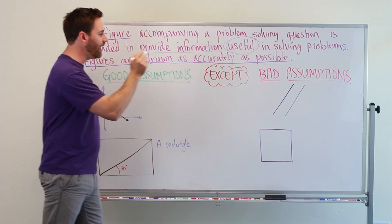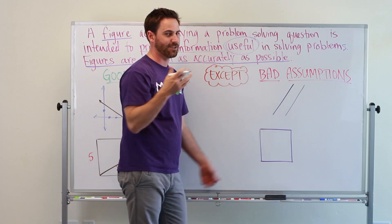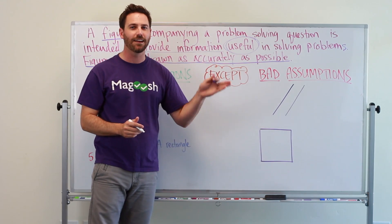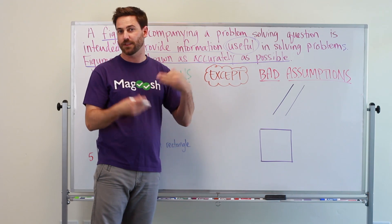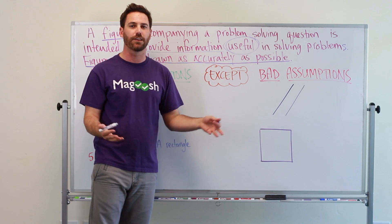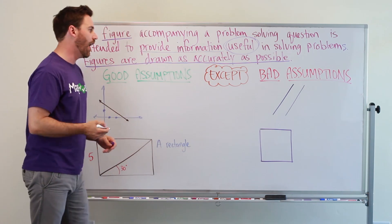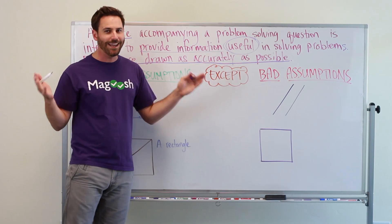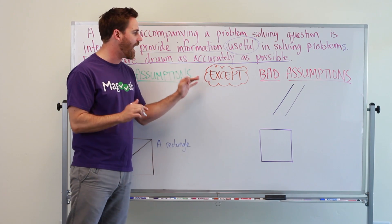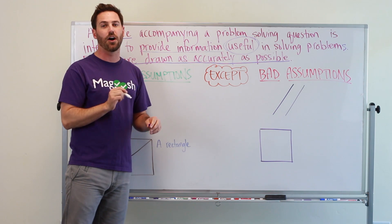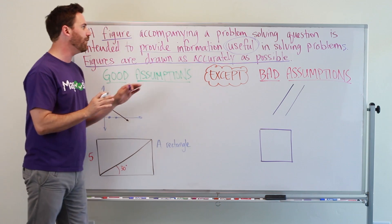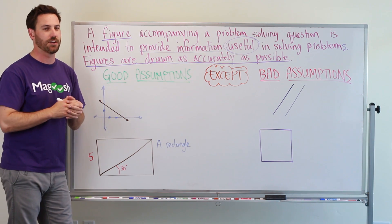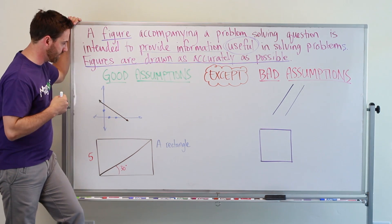There is one exception, of course. There's always going to be an exception. Sometimes, it will say in the question itself, the figure is not drawn accurately or not drawn to scale. In those scenarios, you have to ignore all this. But in general, unless you see that written on the question, then you can safely assume that there's useful information that you can draw from the figures on the test.